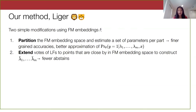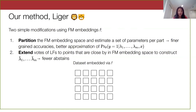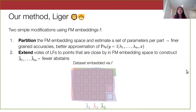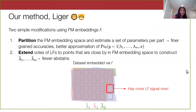The second thing LIGER does is improve coverage of the labeling functions by extending them in embedding space in a k-nearest neighbors fashion. Points that don't have a vote but are close to another point that does will get the vote propagated to them. This reduces the number of abstains and allows for more signal on these points. When we apply this transformation to each labeling function one by one, our extended labeling functions cover the entire dataset — or relatively more of it. The data point that previously had no votes now has signal from two labeling functions, allowing for a more informed probabilistic output.